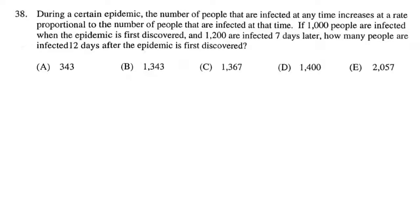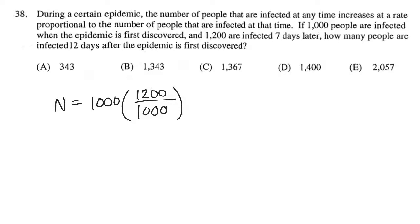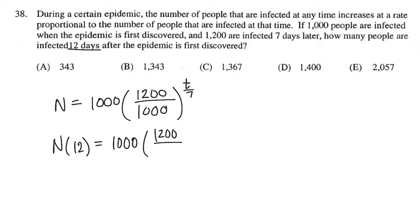Here we have an exponential growth problem. In general, you can set up your formula as 1000 × (1200/1000)^(t/7). We want to know the population after 12 days, so we substitute t = 12: 1000 × (1200/1000)^(12/7). You should end up with answer choice C.